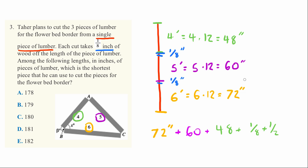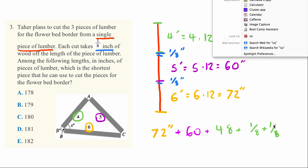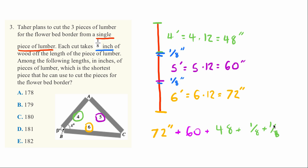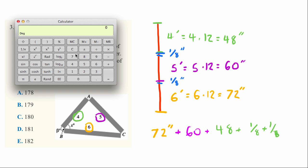We could add this together by hand, but maybe it's easier just to use a calculator. Let me pull out a calculator. What we'll do is say, what is 72 plus 60 plus 48 plus 1 divided by 8 plus 1 divided by 8? And the answer is 180.25.